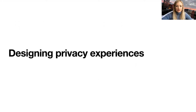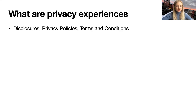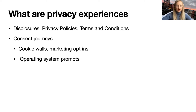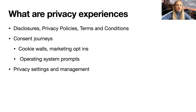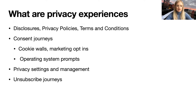Designing privacy experiences — what are they? We have disclosures: privacy policies, terms and conditions — table stakes for digital properties. We have consent journeys: cookie walls, marketing opt-ins, and operating system prompts where we're asking users to consent to something. We have privacy settings and management, empowering users to take control and make decisions. We also have unsubscribe journeys — from email marketing, for example — which are often required by law to be frictionless so someone can easily opt out of marketing communications.